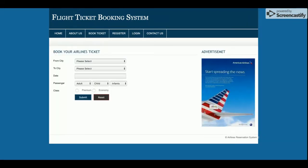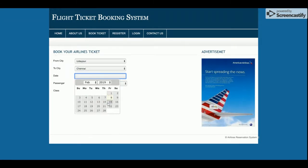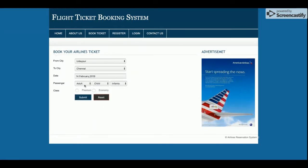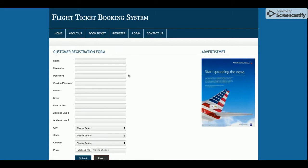This is the Book Ticket page — it is a totally dynamic page. If you want to book a ticket, you search by city: from city, to city, date, number of adults. You can see this is the jQuery date plugin. You can also select adult, child, and the class in which you want to travel.